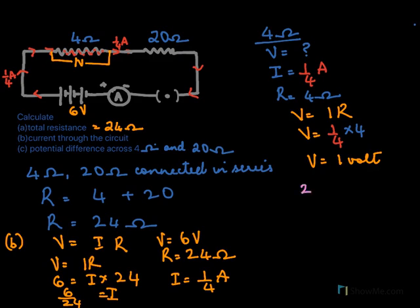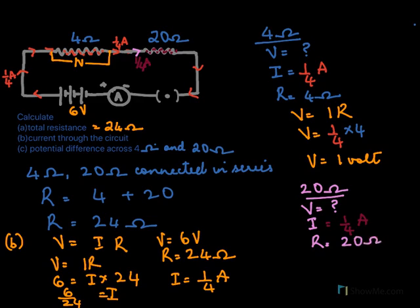To find the potential difference across the 20 ohm resistor: the current is again 1/4 amperes (the same current flows through all series resistors) and the resistance is 20 ohms. Using V equals IR gives V equals (1/4) times 20, so V equals 5 volts. The voltage across the 20 ohm resistor is 5 volts.